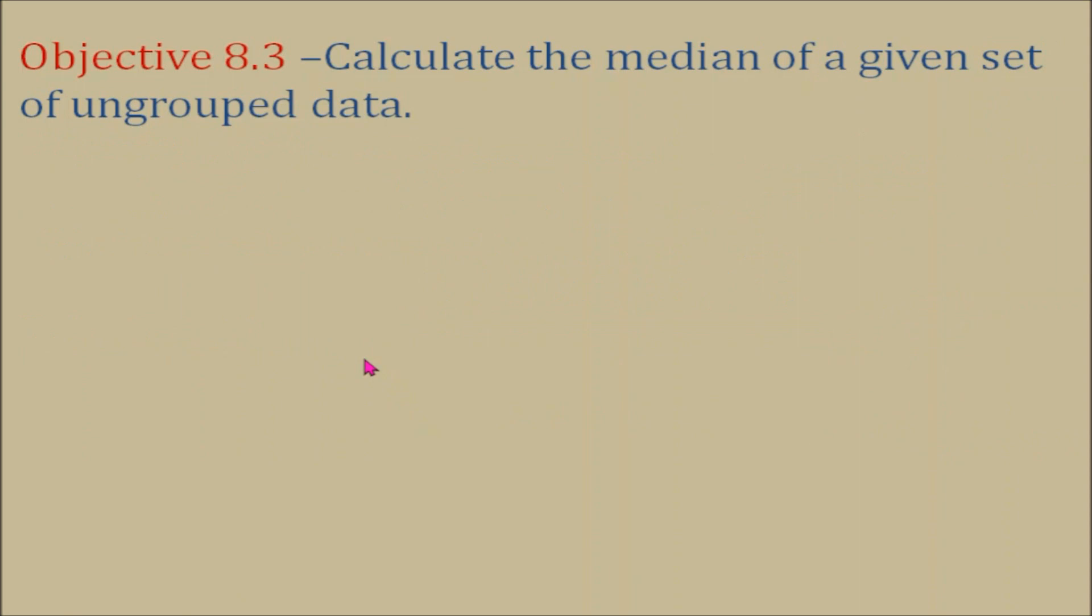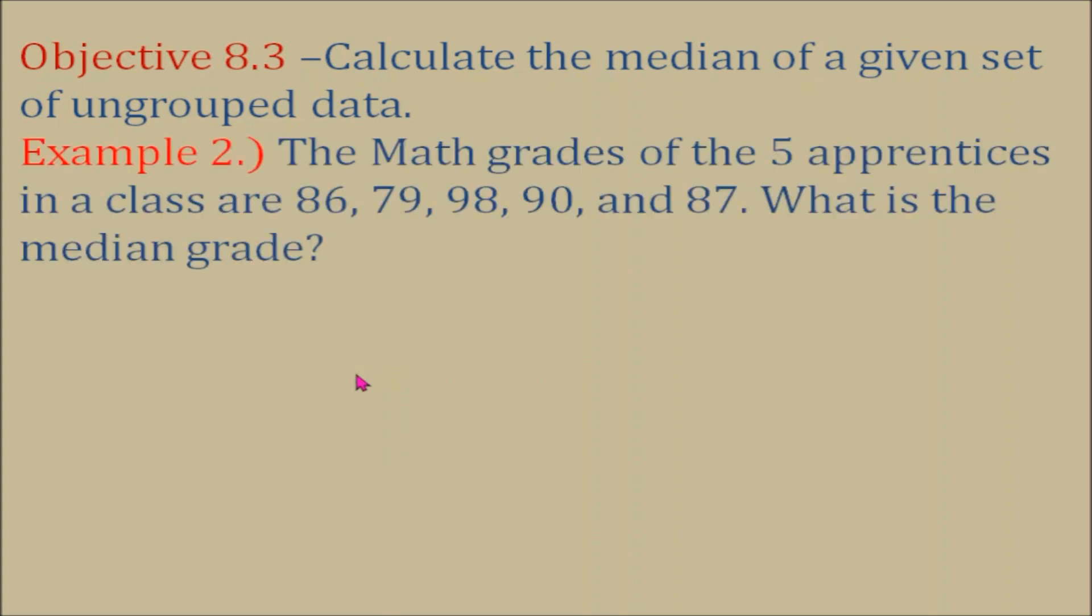Objective number three, calculate the median of a given set of ungrouped data. Example number two, the math grades of the five apprentices in a class are 86, 79, 98, 90, and 87. What is the median grade? For our solution, we are going to arrange the numbers from the lowest to the highest or it can be from the highest to the lowest. And this middle number here, 87, is the median.